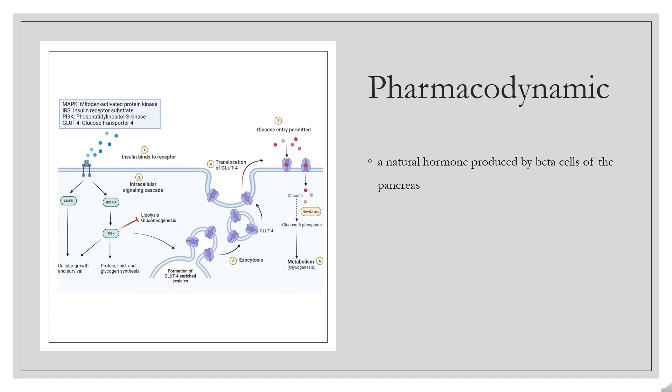Pharmacodynamic: Insulin is a natural hormone produced by beta cells of the pancreas. In non-diabetic individuals, a basal level of insulin is supplemented with insulin spikes following meals.